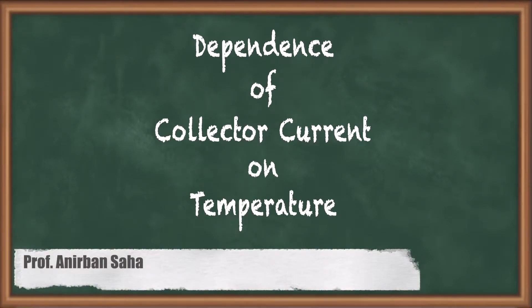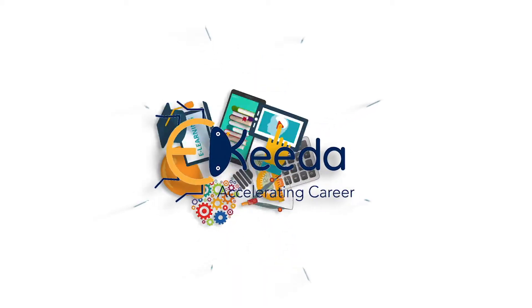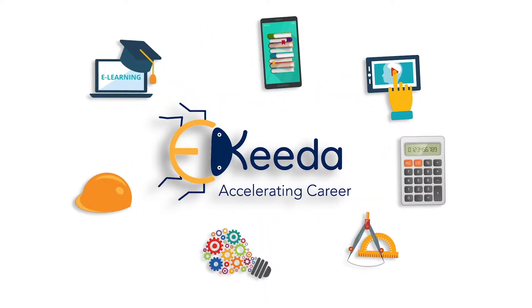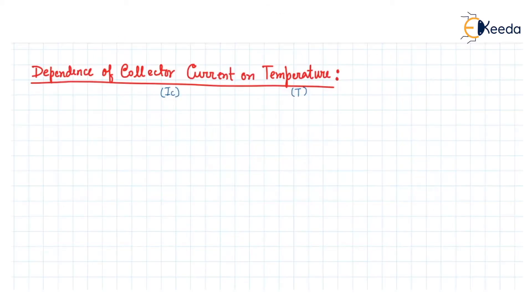Hello friends, in this video we are going to discuss the dependence of the collector current, that is the IC current, on temperature T. In a BJT, the IC current equation is written as IC = βIB